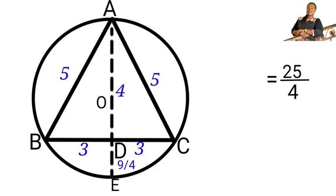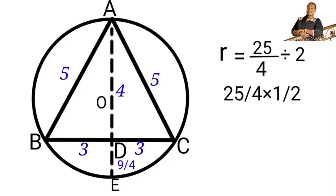So to find r, we have to divide the diameter by 2. So r will be equal to 25 over 4 divided by 2. When we solve, we have 25 over 4 times 1 over 2, which will give us 25 over 8. When we divide 25 by 8, we have 3.125. Finally, the radius of this circle is 3.125.